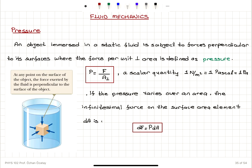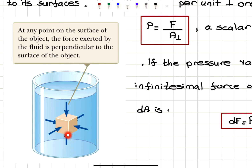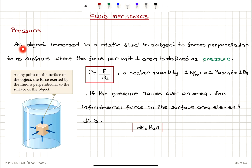When does pressure arise? For example, if you have an object immersed in a static fluid, this object will feel forces from all of its sides. So if this is a cubic object, the force per perpendicular area would be acting on the side areas of the cube. At any point on the surface of the object, the force exerted by the fluid will be perpendicular to the surface. So it will feel a pressure. When this object is immersed in a static fluid, it's subject to forces perpendicular to its surfaces, and the force per unit perpendicular area is our pressure.